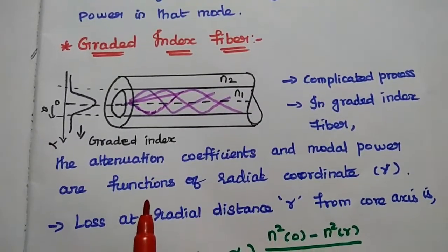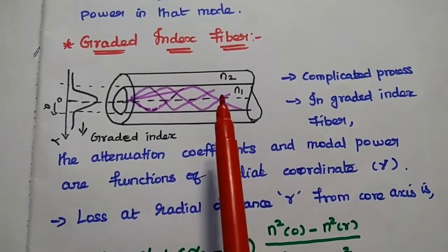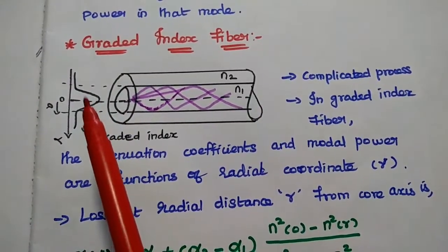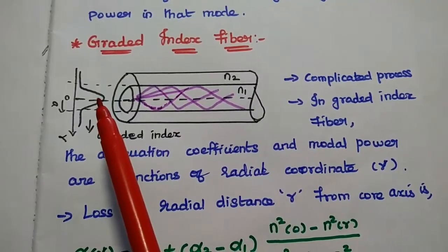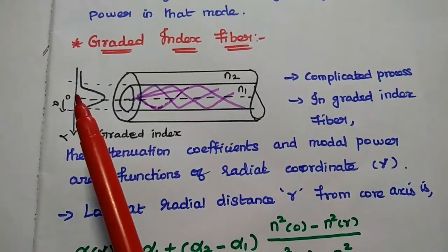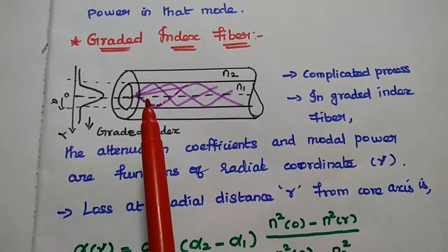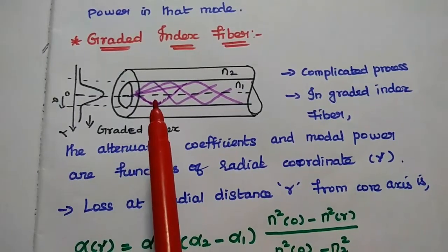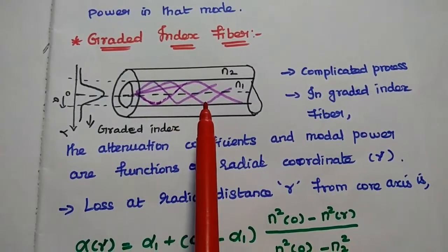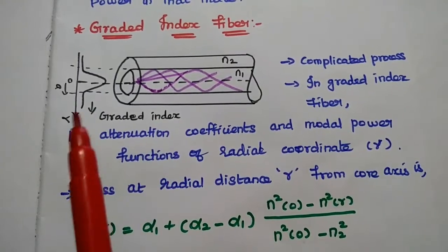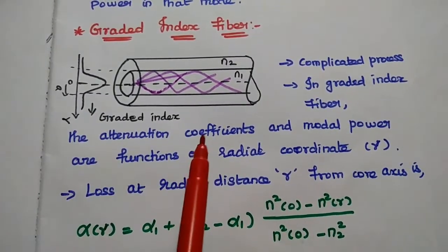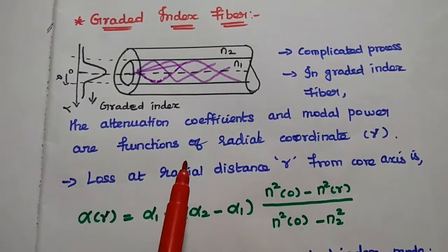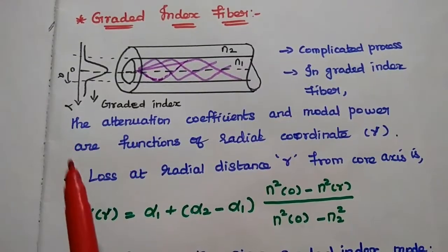Next, we are going to analyze the loss for graded index fiber. In graded index fiber, the refractive index is not uniform — it continuously changes with respect to the radial distance from the core axis. This makes it a complicated process, and it is difficult to derive the core cladding losses directly. In graded index fiber, the attenuation coefficients alpha1 and alpha2 and the modal power are all functions of the radial coordinate r.